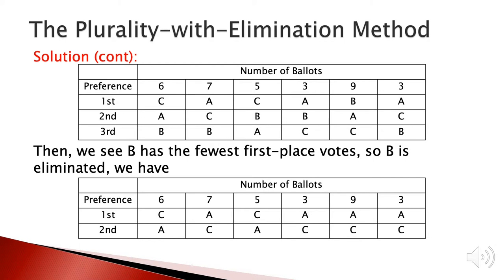Now we see B has only 9 first preference votes, so next we remove B from the preference table and move the remaining candidates up to fill the positions. We have a preference table with only A and C. Comparing their first preference votes, A has 22 votes and C has 11, so A is the winner of this election.